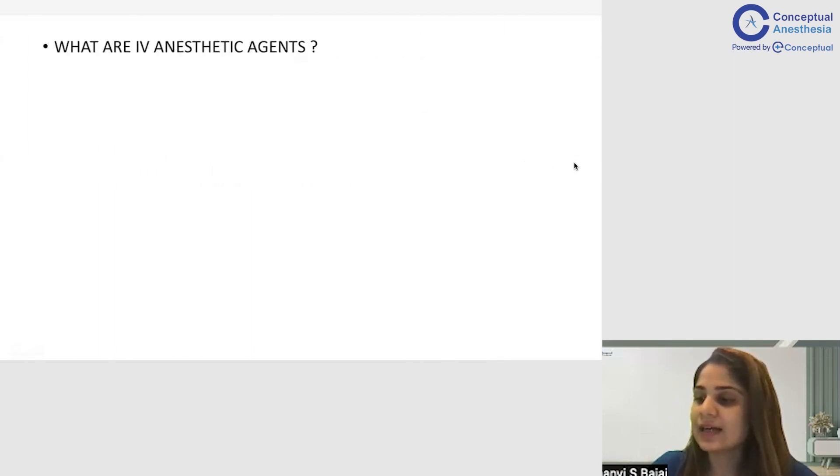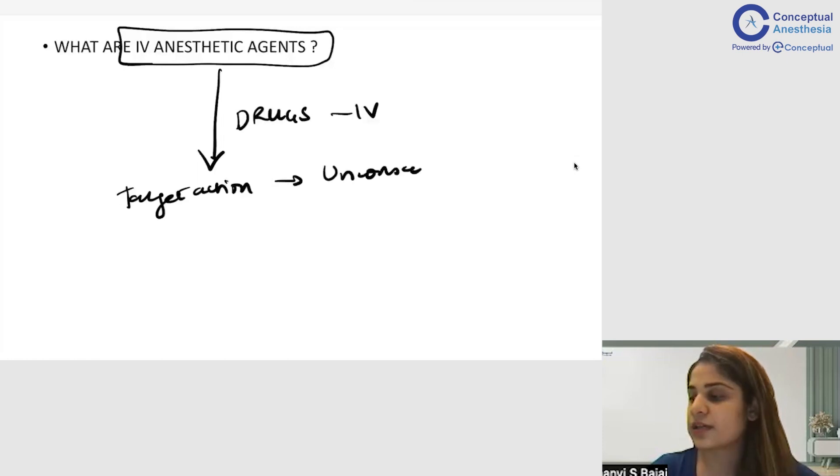Now what exactly are IV anesthetic agents? Imagine you are walking inside the OT in the morning and suddenly your teacher or guide comes in and asks you a very simple question: Tell me what are IV anesthetic agents? And you will be stumped, you will start saying propofol, ketamine. She will say no, what are these drugs? So IV anesthetic agents are drugs that are given intravenously to produce a target action. And what is that target action? The target action is to make the patient unconscious.